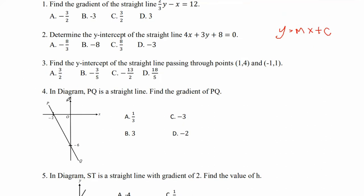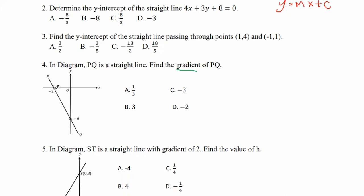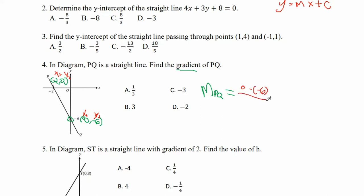Number 4: in the diagram, PQ is a straight line. Find the gradient of PQ. To find the gradient we need the coordinates of two points. One point is at x equals negative 2, y equals 0, so (negative 2, 0). The other point is at x equals 0, y equals negative 6, so (0, negative 6). Gradient = (y2 minus y1) over (x2 minus x1) = (0 minus negative 6) over (negative 2 minus 0) = 6 over negative 2 = negative 3. The answer is C.